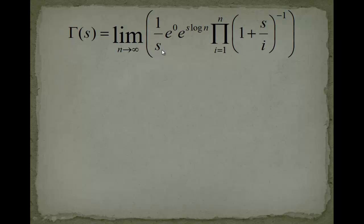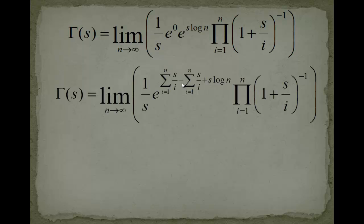Now, in the next step, we want to introduce partial sums here. Because 0 can be written as something minus something, which will give you 0 again. And we take this s plus log n and add this.